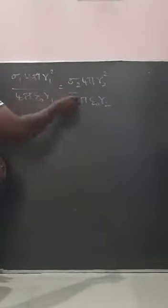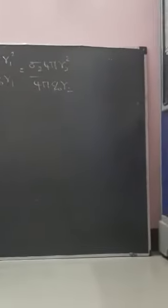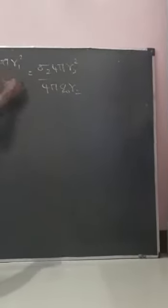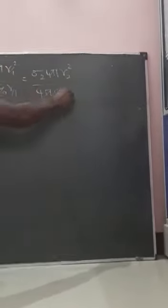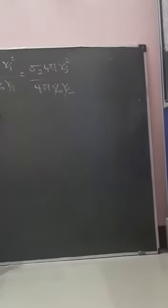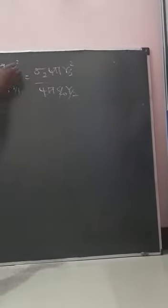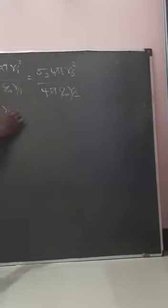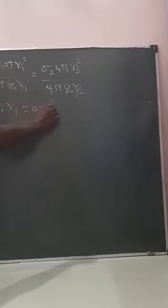If you cross multiply, epsilon r1 cancels, r1 cancels with r1, and r2 cancels with r2. So we arrive at sigma 1 times r1 equals sigma 2 times r2.